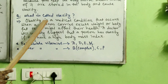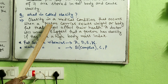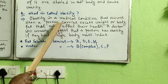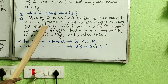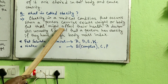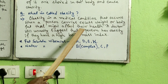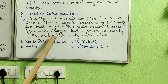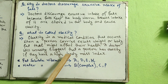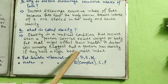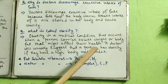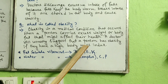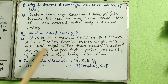Obesity is a medical condition that occurs when a person carries excess weight or excess body fat, which might affect their health. A doctor will usually suggest that a person has obesity if they have a high body mass index (BMI). If your BMI value is very high, it means you are obese.